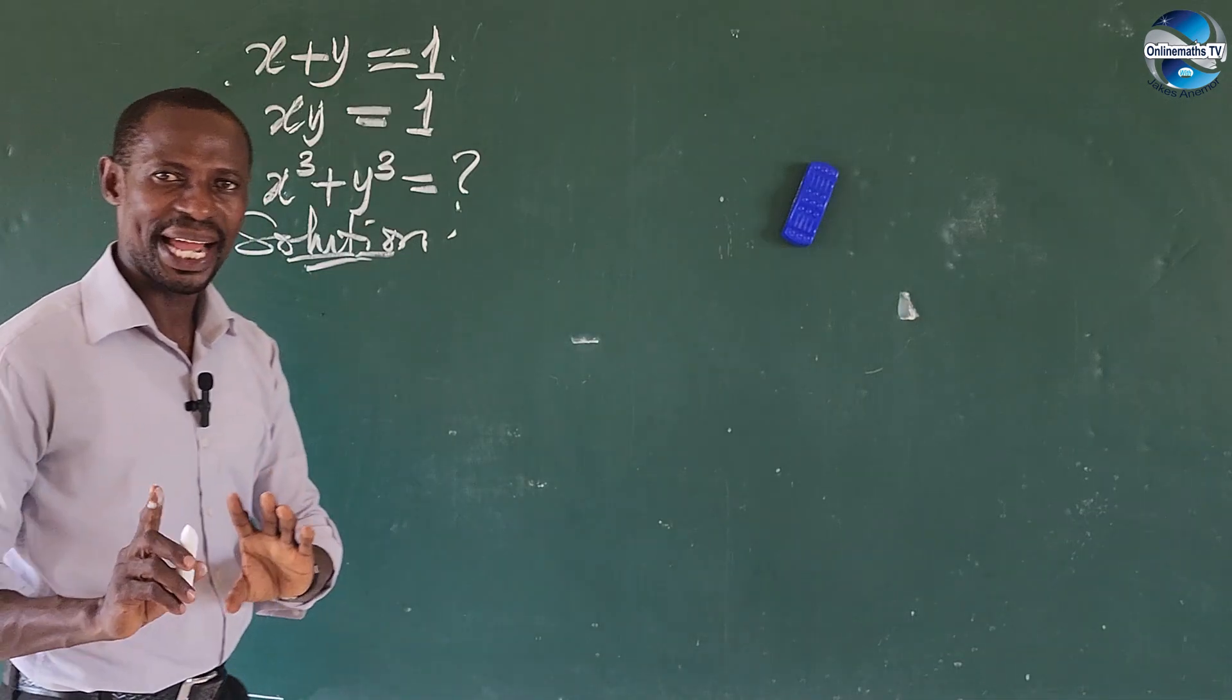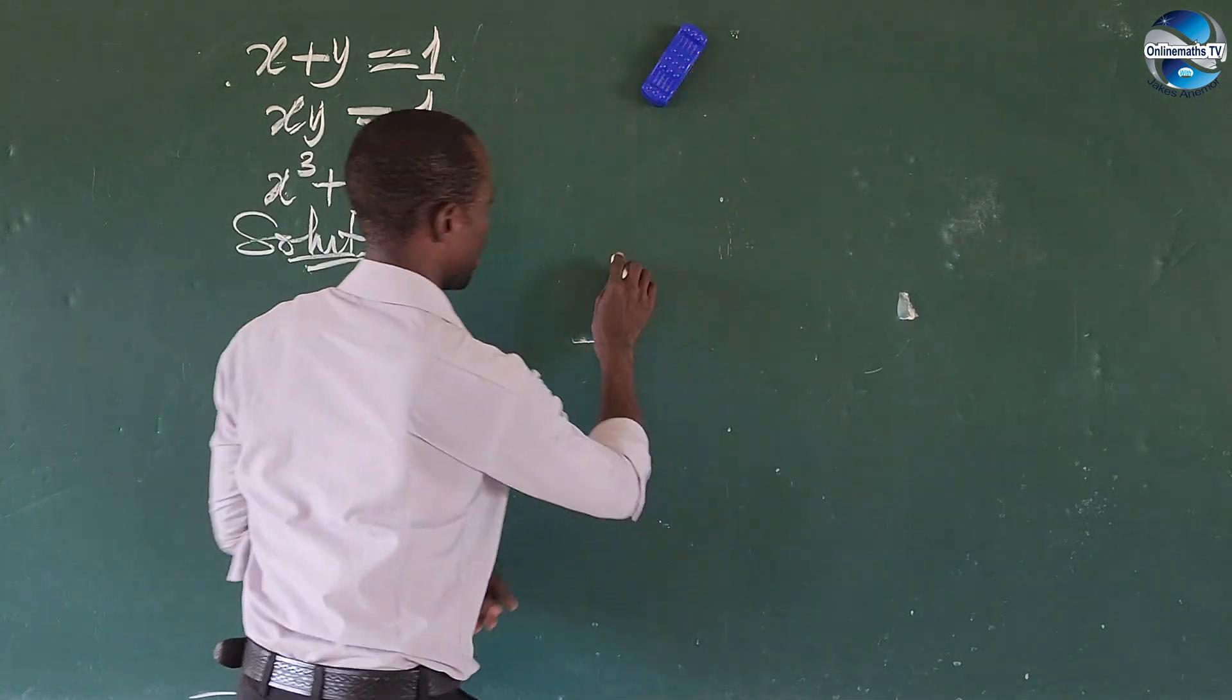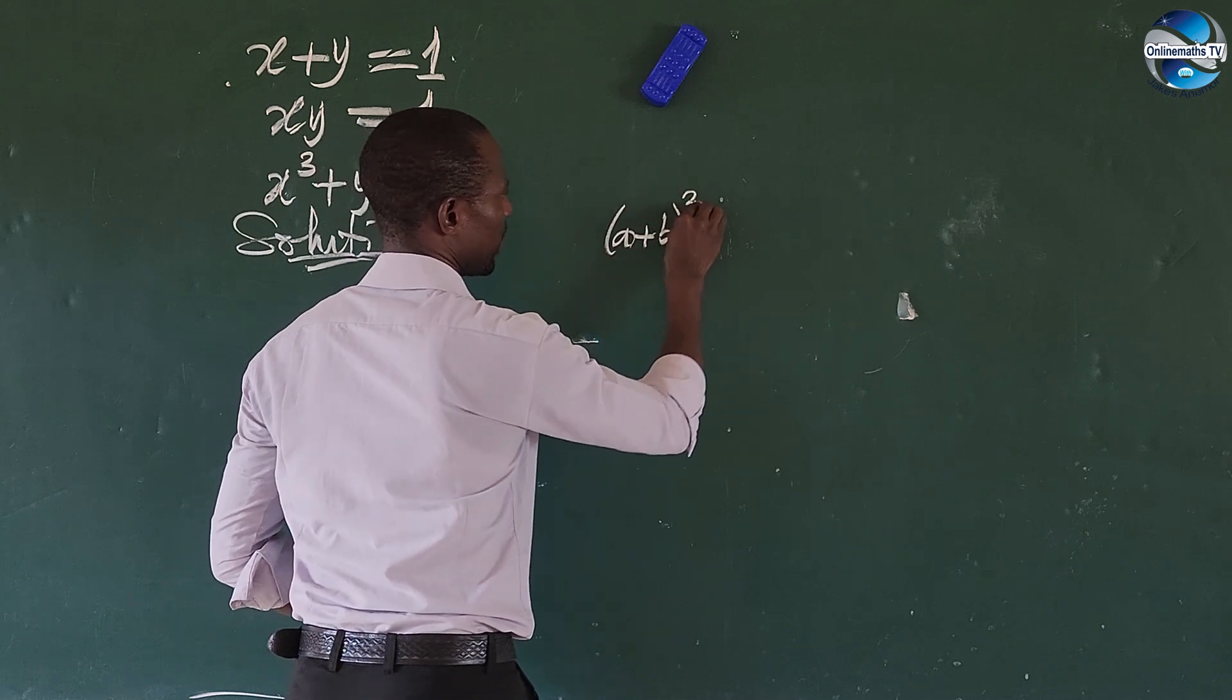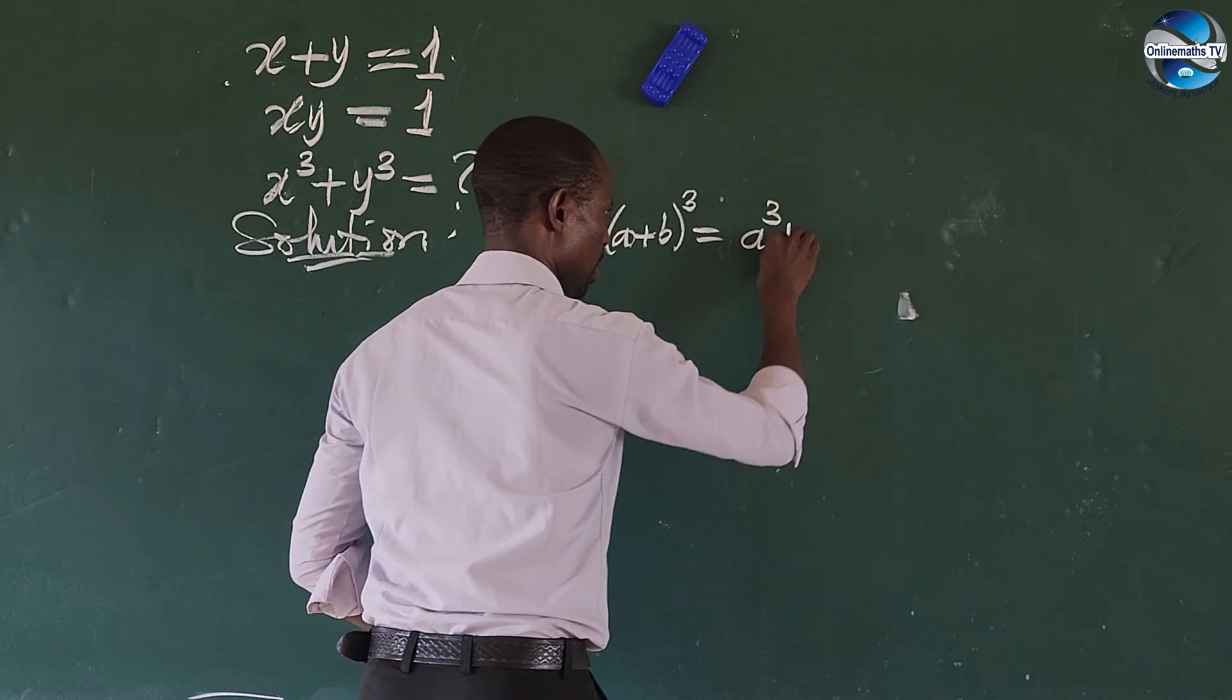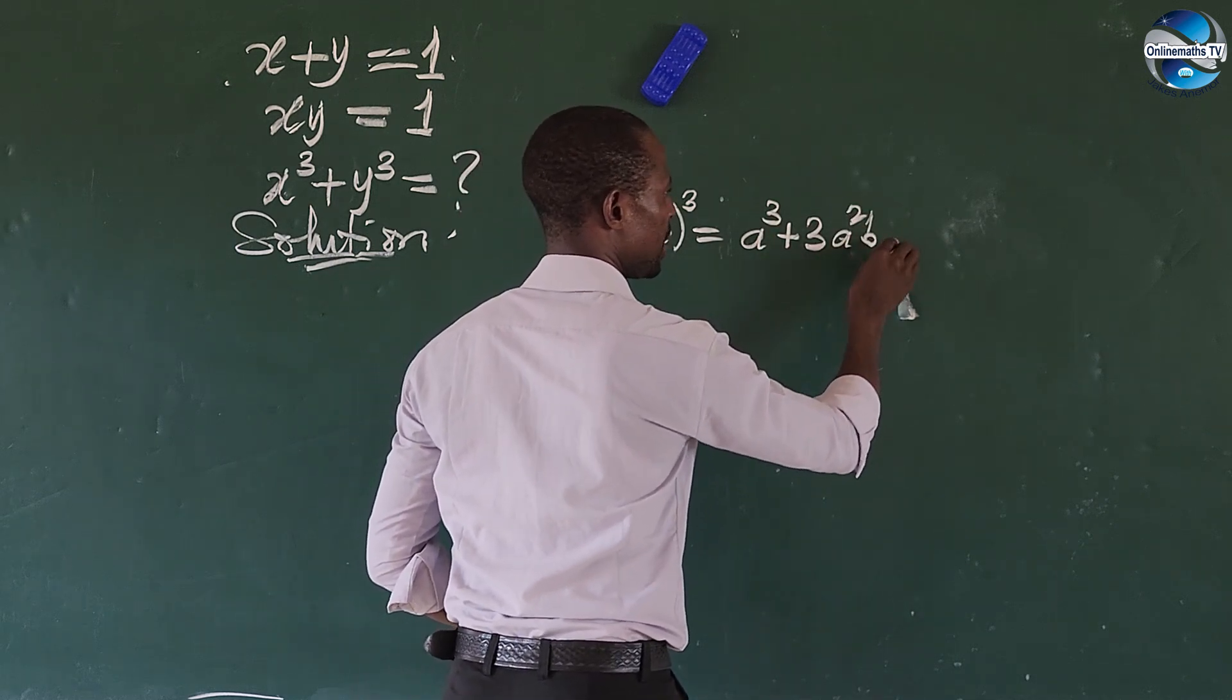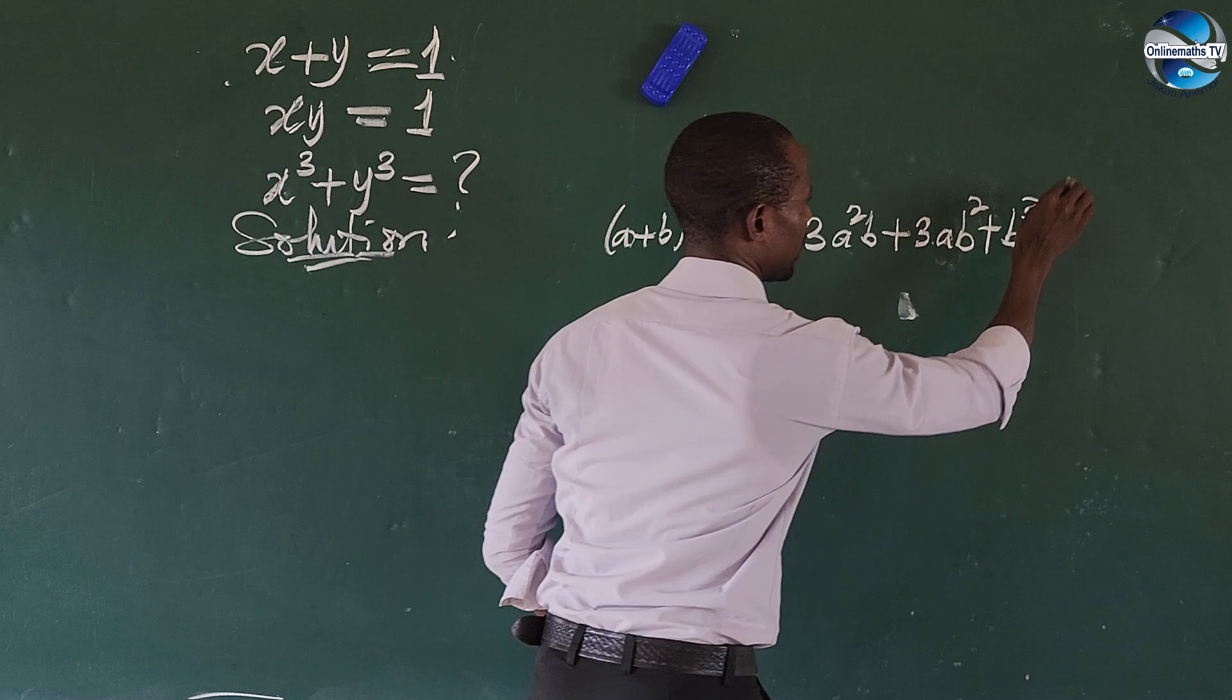Now, according to our algebraic identity, it says that if we have, let's put it here, if you have a plus b to the power of 3, this is the same thing as a to the power of 3, then plus 3a²b plus 3ab² plus b to the power of 3.